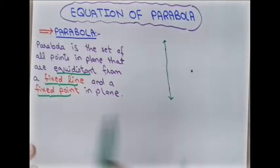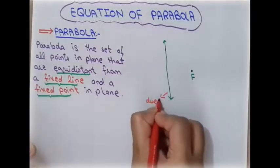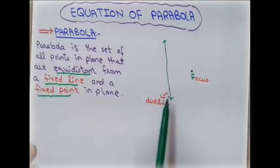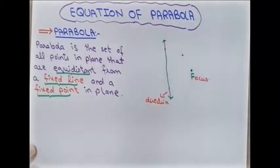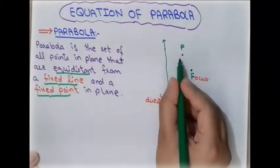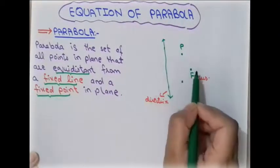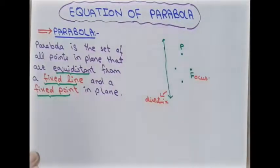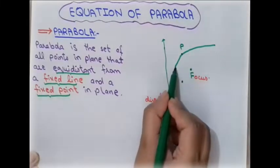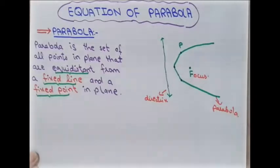The fixed line is called the directrix and the fixed point is called the focus, represented by F. If we take a point P, the distance from P to the focus equals the distance from P to the directrix. Joining all such points forms a U-type shape, which is the parabola.